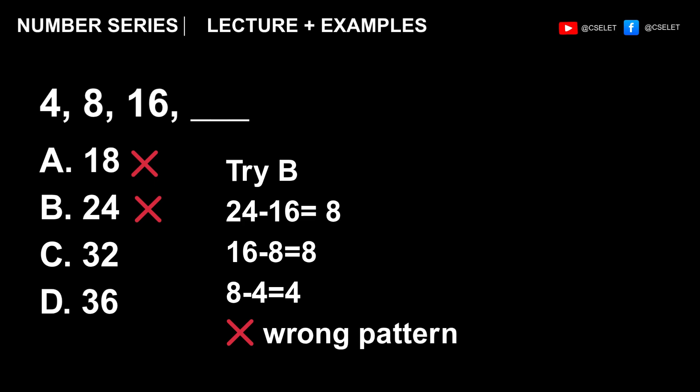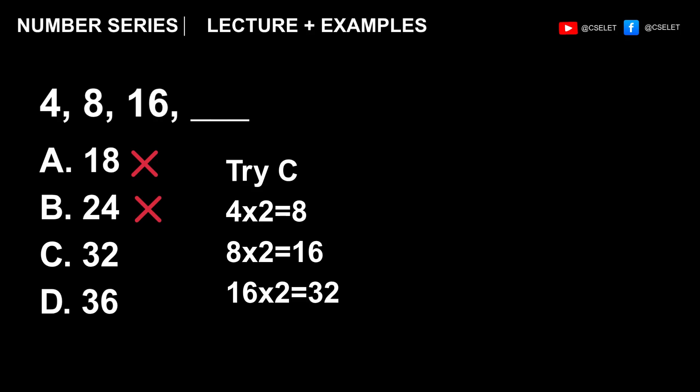Move on to letter C. So addition didn't work. We also didn't get a pattern from subtraction. So let's try multiplication. Let's say 2. 4 times 2 is 8. 8 times 2 is 16. 16 times 2 is 32. So, besides finding a pattern here, the answer we got is also in the choices, which is letter C. Therefore, the correct answer is letter C. You don't need to solve letter D because you already have an answer.